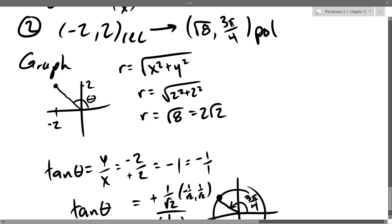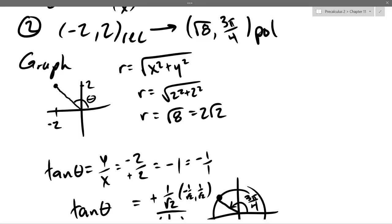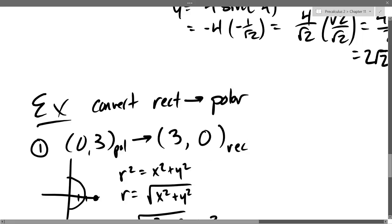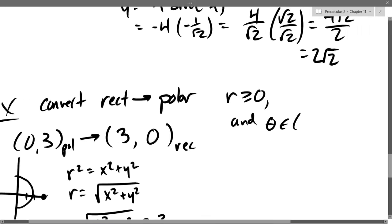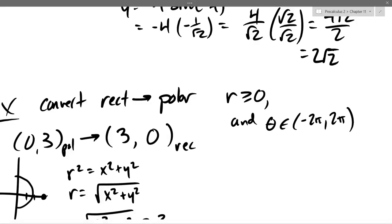So for all rectangular-to-polar conversions, I want r to always be greater than or equal to zero, and theta to be between −2π and +2π. Don't use −2π — use 0 instead. Don't use +2π — use 0 instead, if that's your angle. Those are the restrictions I'll put on your midterm or quiz.